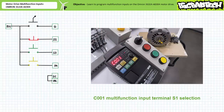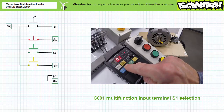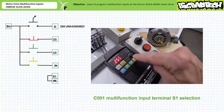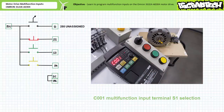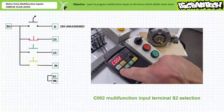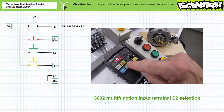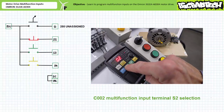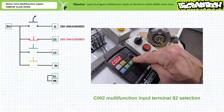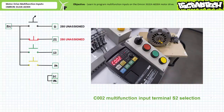Navigate to communication parameter C001, multi-function input one selection. Press mode. As anticipated, it is in the default state of 00, forward. Increment this to 255, unassigned, and press enter to save it. Navigate to communication parameter C002, multi-function input two selection. Press mode. As anticipated, it is in the default state of 01, reverse. Decrement this to 00, forward, and press enter to save it.